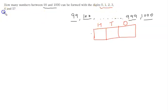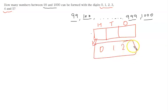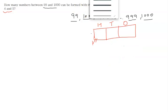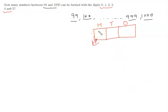We have to make numbers using the digits 0, 1, 2, 3, 4, 5. Since zero is available, we cannot write zero at the hundreds place, because if we put zero there it will not be considered a three-digit number. So for the hundreds place, we can write any digit except zero — that gives us 5 ways.